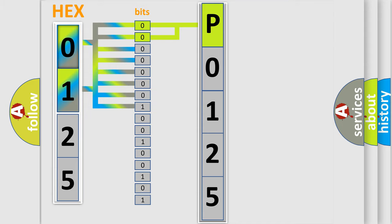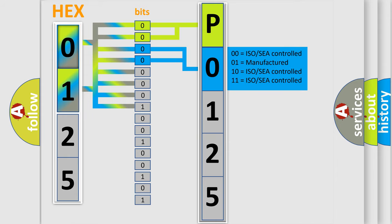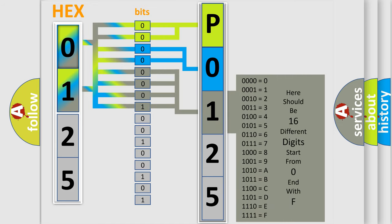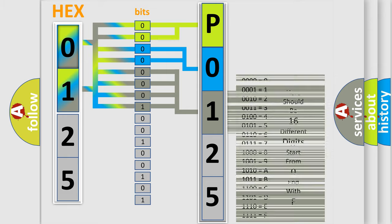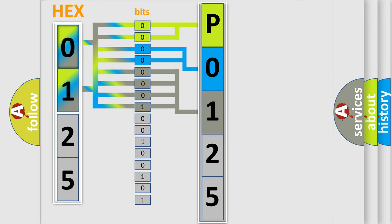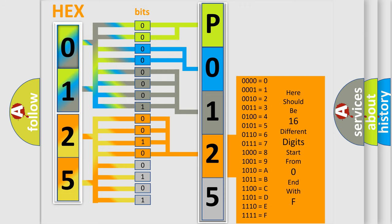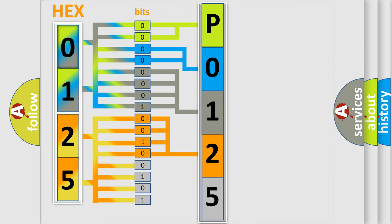The next two bits determine the second character. The last four bits of the first byte define the third character of the code. The second byte is composed of a combination of eight bits. The first four bits determine the fourth character of the code, and the combination of the last four bits defines the fifth character. A single byte conceals 256 possible combinations.